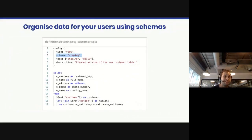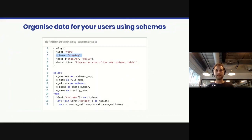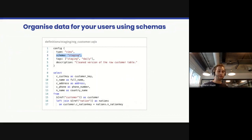One best practice is to organize data for users using schemas. Internally, for example, everything we transform in the warehouse lives in a schema named dataform_stg for staging, and then we have a schema named analytics that we use in our BI tools. We recommend having a schema or handful of schemas for transformation and staging, and then clearly separating the schemas you publish to the rest of your business and BI tools.